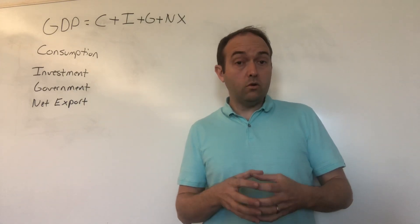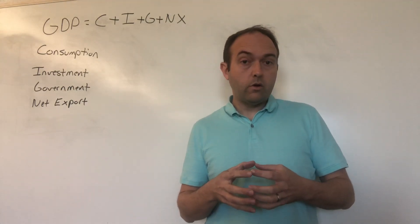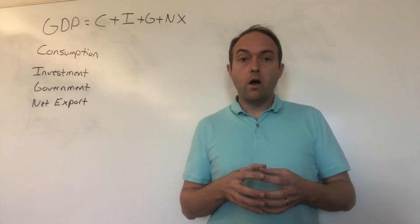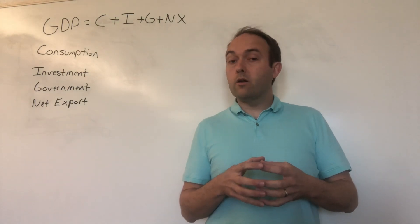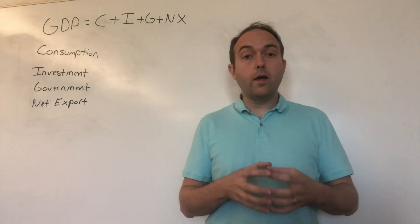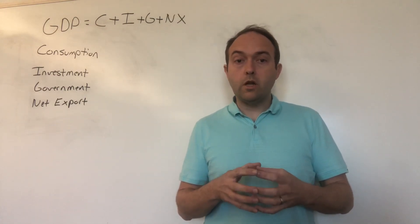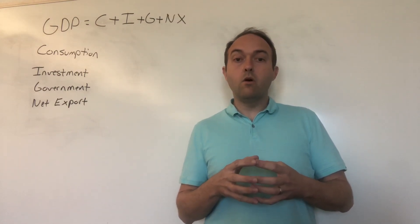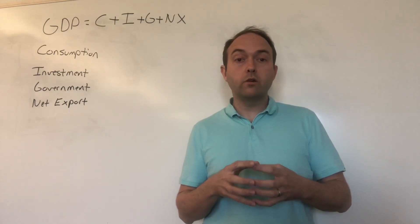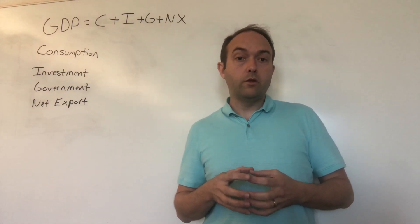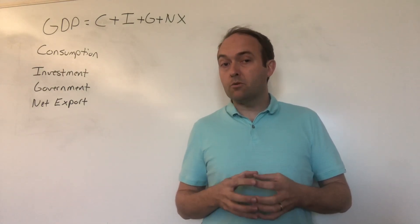Some things that are specifically excluded when we calculate GDP are the sale of used things. For example, if you bought a used car in 2018 and that car was made in 2013, that used car would have been counted in 2013's GDP, but not when you bought it in 2018. Also excluded from GDP is the sale of ownership of companies, specifically stocks. If you buy 100 shares of stock in Microsoft from somebody this year, that's just transferring ownership, not creating new products. That's not captured in GDP.